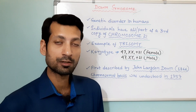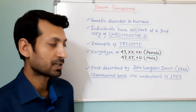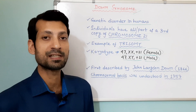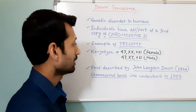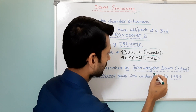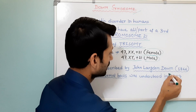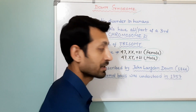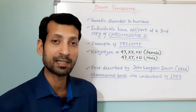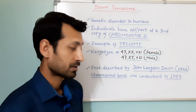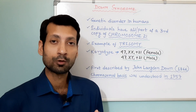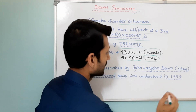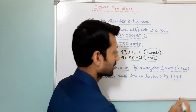Down syndrome was first described by a British physician, John Langdon Down, in the year 1866. But the chromosomal basis was understood in 1959.